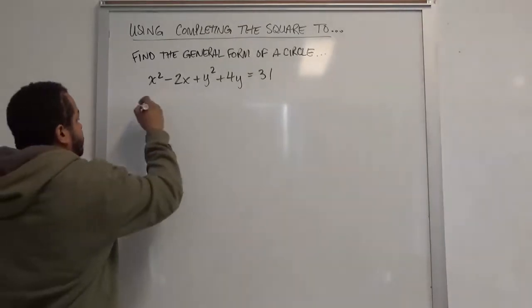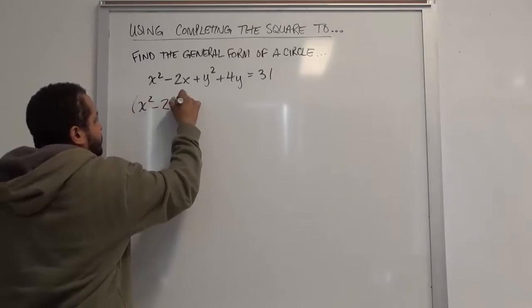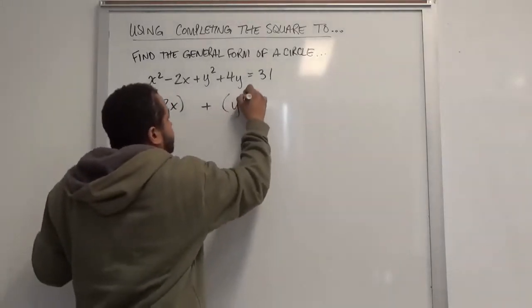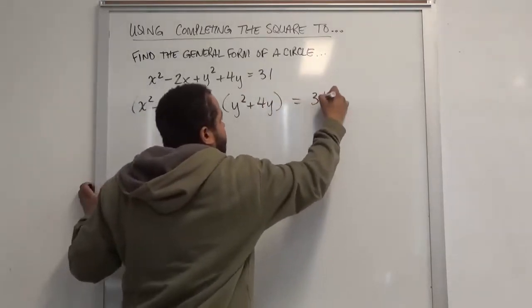Our first two terms we're going to isolate are x squared minus 2x, and our second set of terms are the y squared plus 4y. This is equivalent to 31.